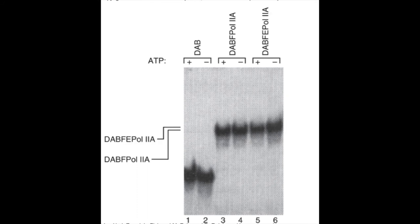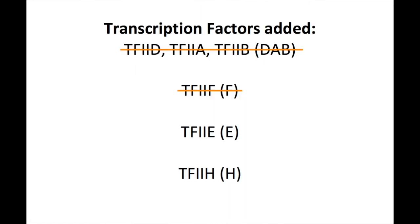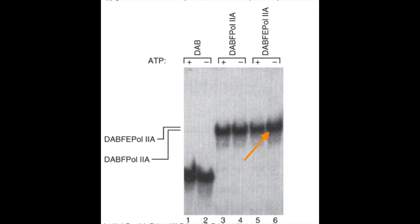Lanes 5 and 6 show the addition of TF2E. Since there is again no difference in mobility upon addition of ATP, we can conclude that TF2E is also most likely not the kinase. In lane 6, the band appears to move slightly slower without ATP; however, this is probably just due to a problem in the way the gel was running, and not a true difference in mobility. Since the difference is subtle and the authors indicate both bands at the same length corresponding to DAB-FE + Pol IIa, we conclude that the mobility between the two is the same.